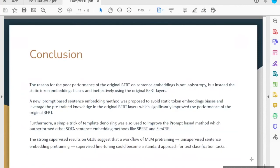In conclusion, this paper points out that the poor performance of original BERT on sentence embeddings is not due to anisotropy but instead because of the static token embedding biases and ineffective use of the original BERT layers. To counter this problem, a new prompt-based sentence embedding method was proposed to avoid these biases and leverage the pre-trained knowledge in original BERT layers by introducing a mask language modeling objective. It significantly improves the performance of the original BERT. Furthermore, a simple trick of template denoising was also used to improve the prompt-based method, which outperforms state-of-the-art sentence embedding methods like Sentence-BERT and SimCSE.